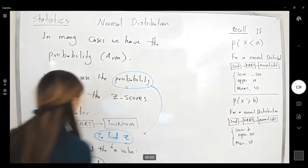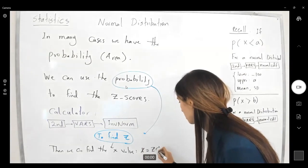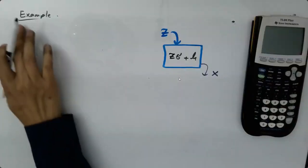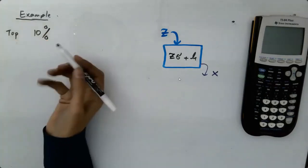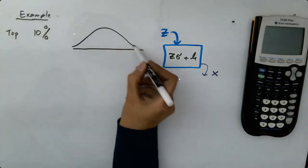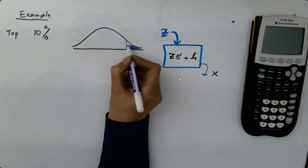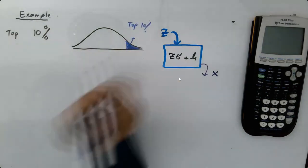So these are the steps that you're going to take. Let's go to the board and see what we have. So in this example, we know that it must be top 10%.